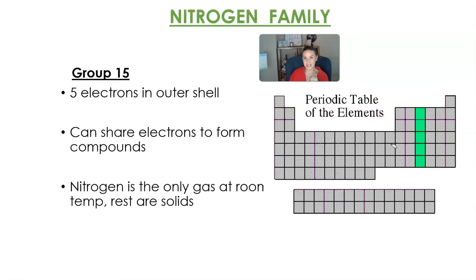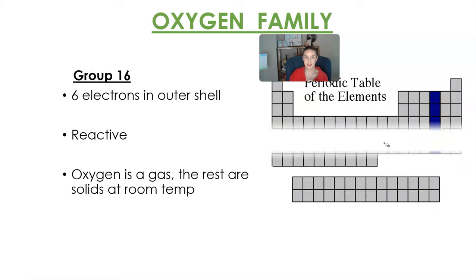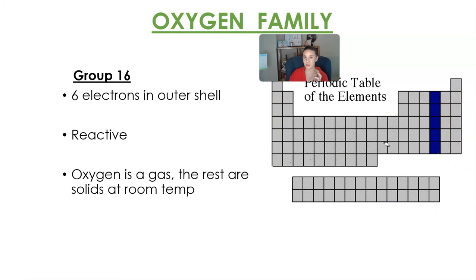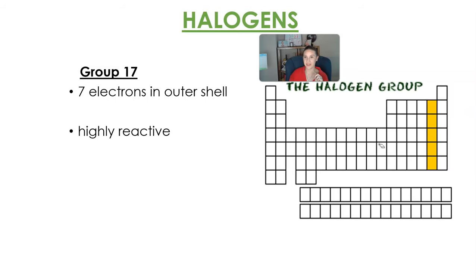Group 15 — the nitrogen family — has five electrons in the outermost shell and can share electrons to form different compounds. Nitrogen is the only one that is a gas at room temperature; the rest are solids. The oxygen family is group 16, with six electrons in the outer shell. They are reactive — oxygen is a gas but the rest are solids at room temperature.